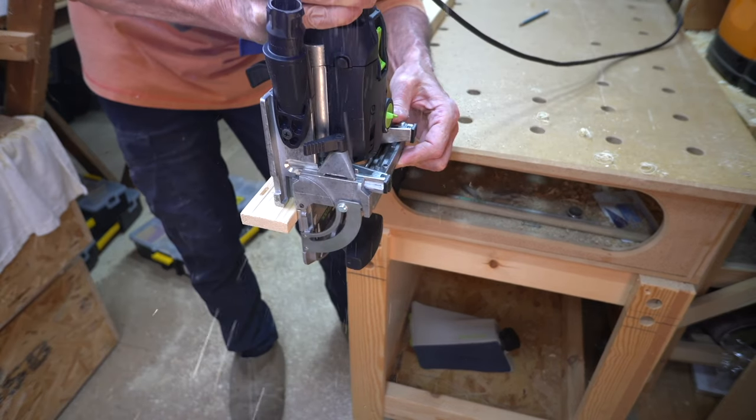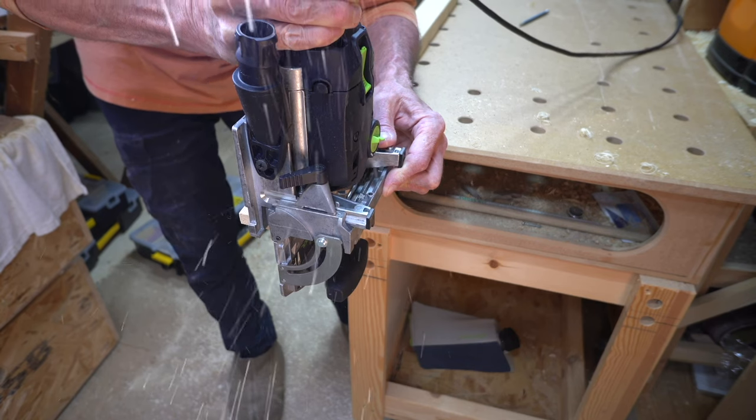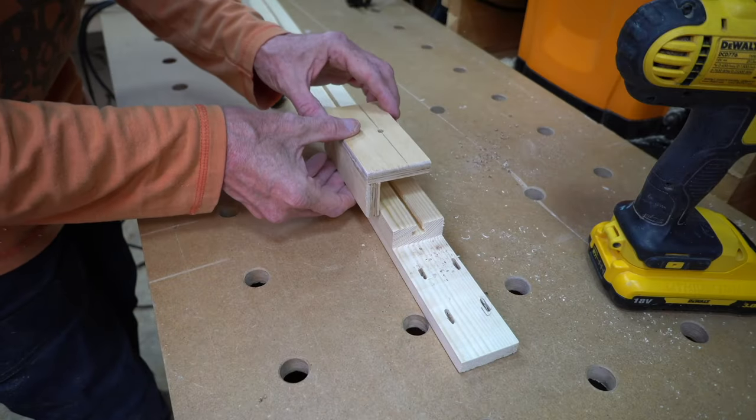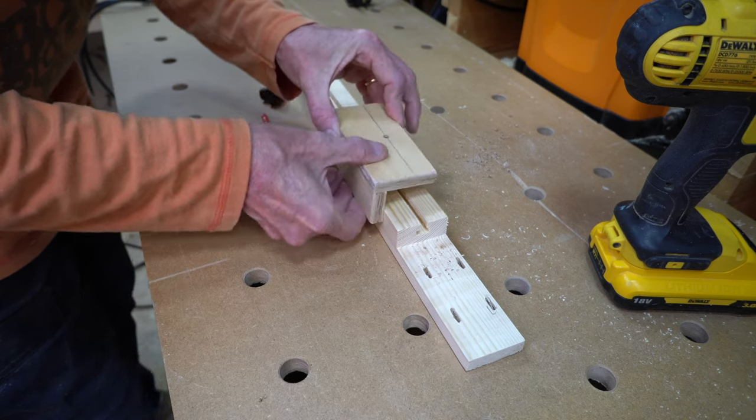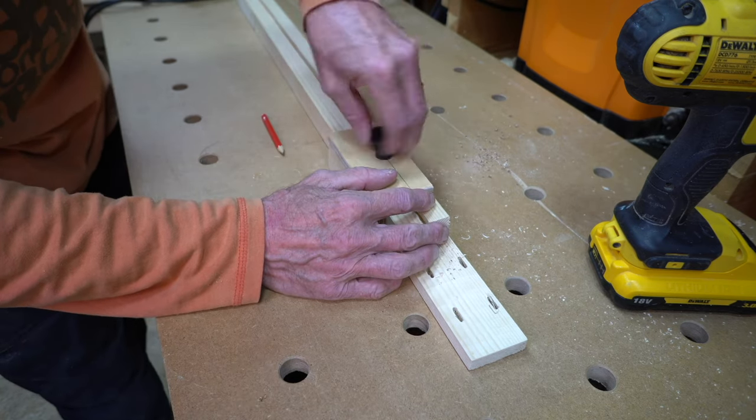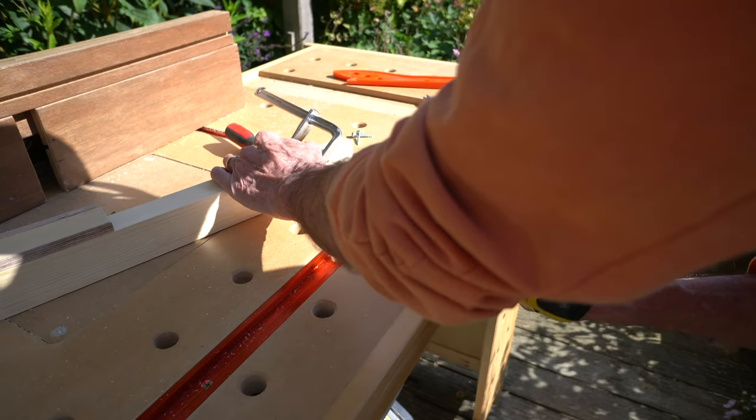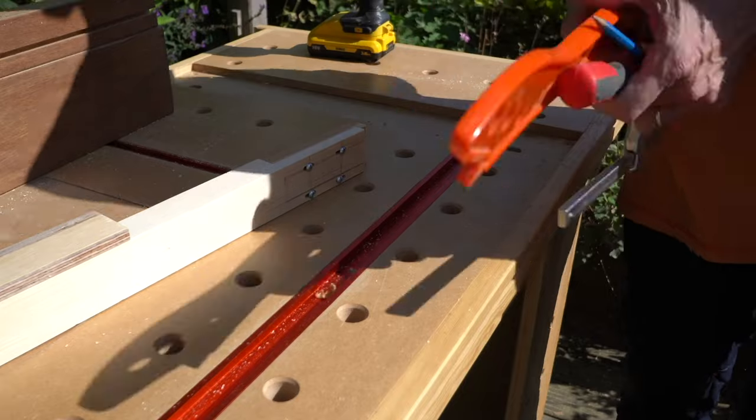I use the dominoes to insert four oval slots to put a pocket hole screw in to fix this sacrificial layer in. All in all, with the T-slots, the fence, the stop, and the sacrificial insert, this jig is extremely useful and it will get a lot of use.